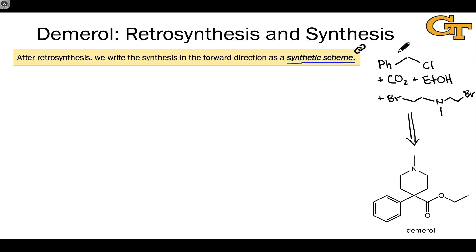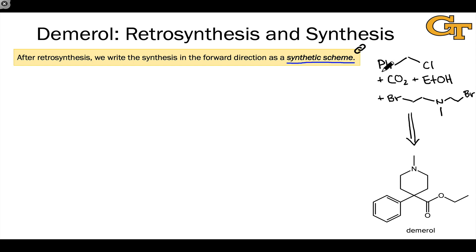The first thing to do is revisit the retrosynthesis briefly. Recall that we worked Demerol back to this benzyl chloride compound, CO2 and ethanol, and this dihalide containing the methylamine functional group built into it. To write the synthesis in the forward direction as a synthetic scheme, we start with the first reaction from the simplest starting material, which in this case is the benzyl chloride. Where we end the retrosynthesis, we start the synthesis.